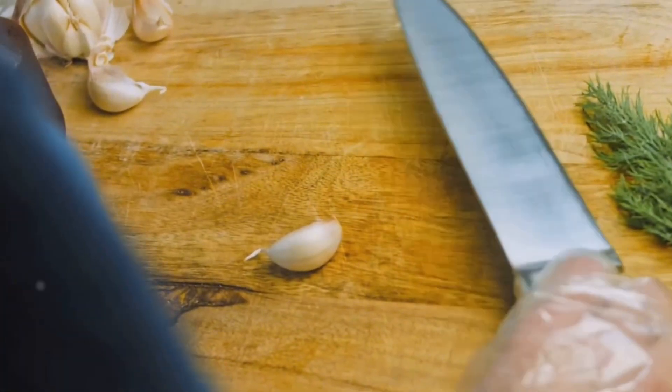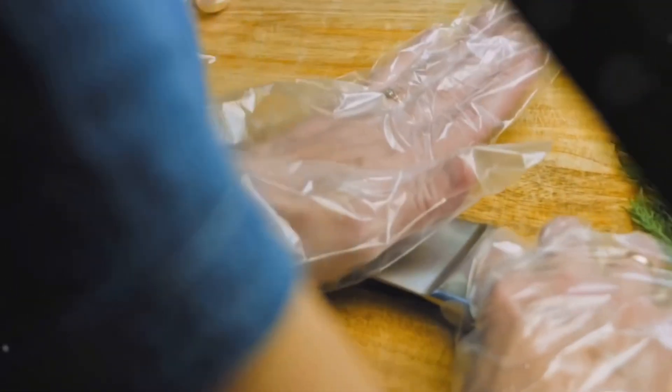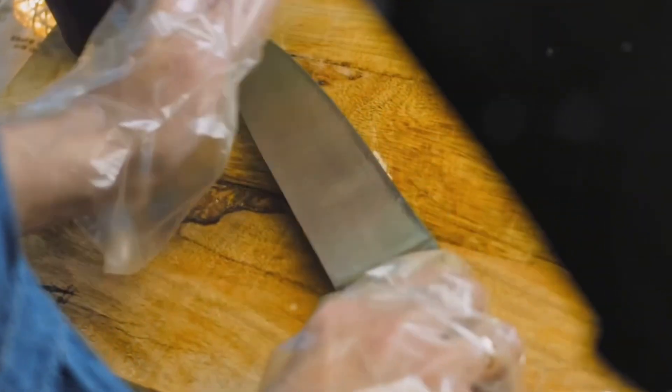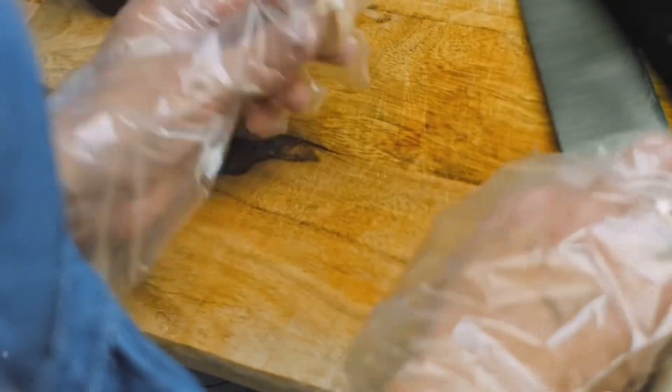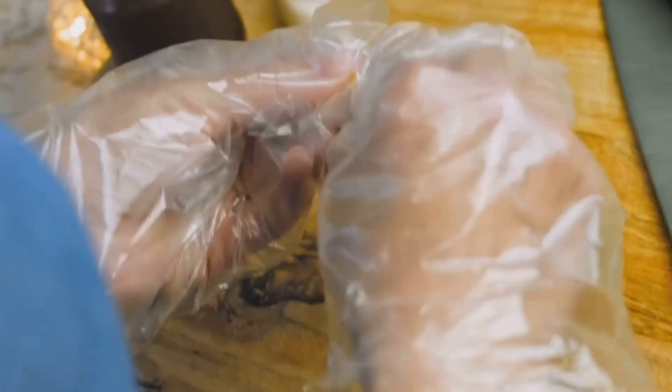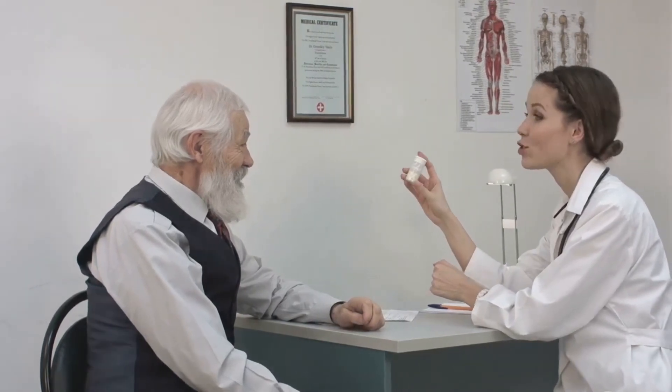Add crushed or minced garlic to your favorite savory dishes, or try roasting whole garlic bulbs for a milder, sweeter flavor. Roasted garlic can be spread on bread or mixed into sauces for a delicious twist. Remember to consult with your healthcare provider before taking garlic supplements, especially if you're on blood-thinning medications. It's important to ensure that garlic supplements won't interfere with any medications you may be taking.